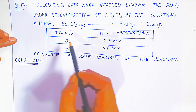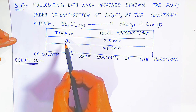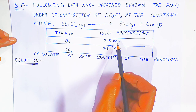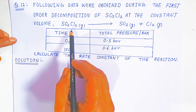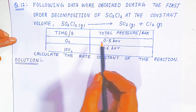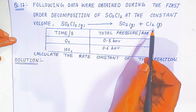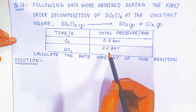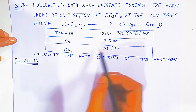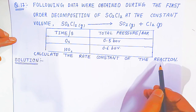At constant volume, these data are given: when time is zero, the pressure is 0.5 bar — that is the pressure of only thionyl chloride with no decomposition. After 100 seconds, with formation of SO₂ and Cl₂, the pressure increases from 0.5 bar to 0.6 bar. Using this experimentally determined data, we are going to find the rate constant of the reaction.